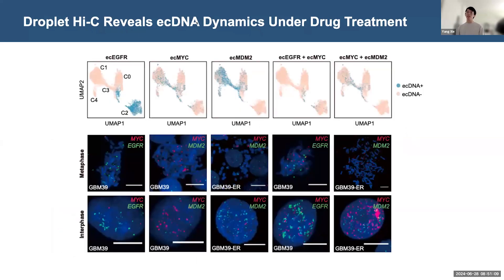With this data, we further analyzed the existence of ecDNA either individually or in combinations. Almost all cells before treatment carry EGFR ecDNA, while the small shared population between conditions contains MYC ecDNA, possibly indicating that gaining MYC ecDNA provides a growth benefit to GBM-39 when EGFR is inhibited. The MDM2 ecDNA is exclusive to the main group of cells after treatment. All these ecDNA predictions and combinations were validated by single-molecule FISH, indicating that the prediction results from our ecDNA classifier are accurate.